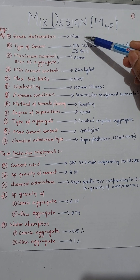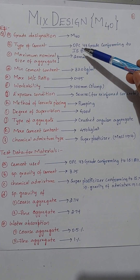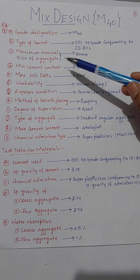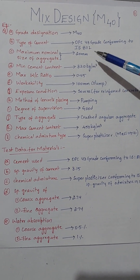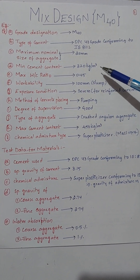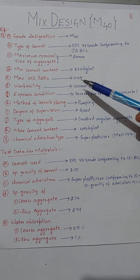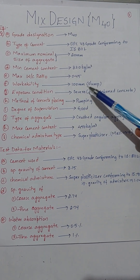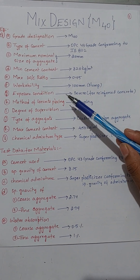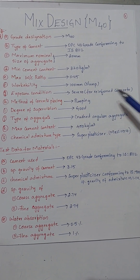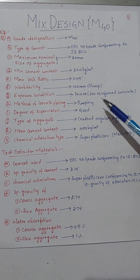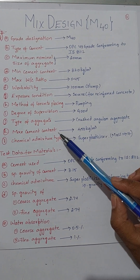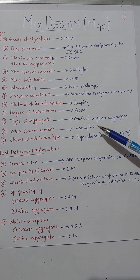The grade of designation we are doing is M40 and the type of cement is OPC 43 grade, which is IS 8112. The maximum nominal size of aggregate should be 20 mm, the minimum cement content should be 320 kg per meter cube, maximum water-cement ratio should be 0.45, and workability should be 100 mm slump. The exposure condition given is severe for reinforced concrete, method of concrete placing is pumping, degree of supervision should be good, and type of aggregate should be crushed angular aggregate. Maximum cement content should be 450 kg per meter cube.